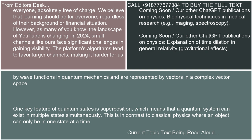One key feature of quantum states is superposition, which means that a quantum system can exist in multiple states simultaneously. This is in contrast to classical physics, where an object can only be in one state at a time.